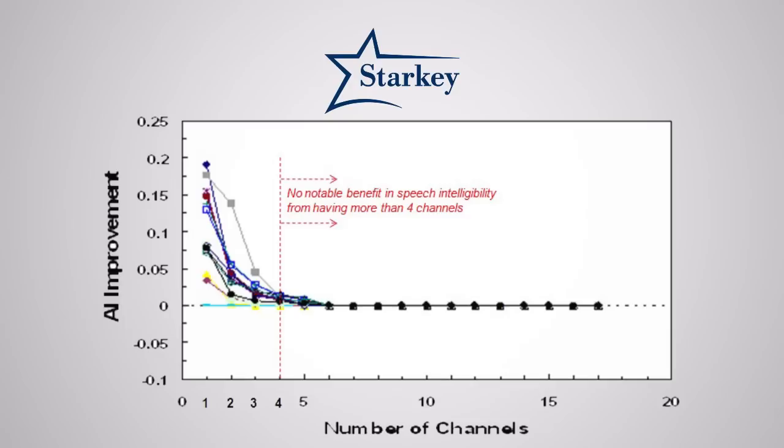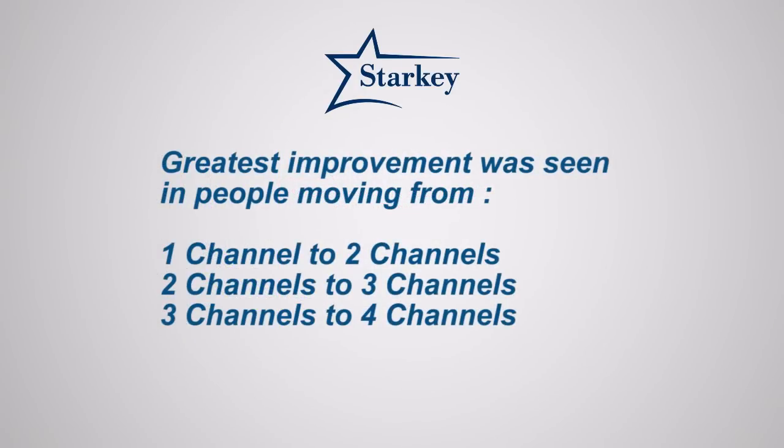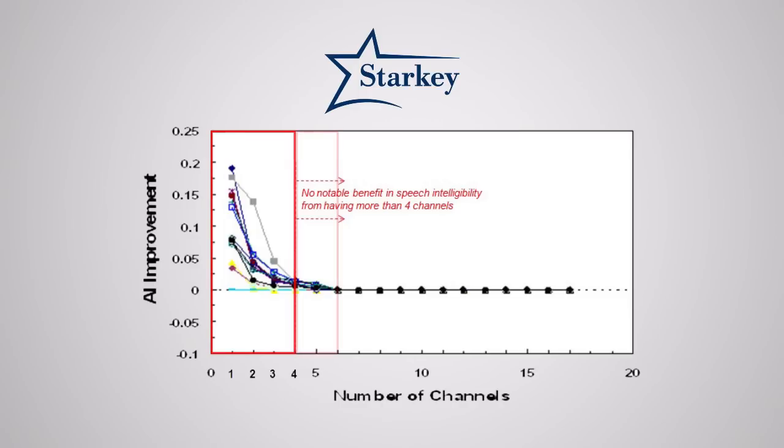They found that the most significant improvement occurred within the first four channels. In other words, the greatest improvements were seen in people moving from one channel to two, two channels to three, or three channels to four. Some improvements were also seen moving from five to six channels, but it was such a small improvement that it was considered to be statistically insignificant.